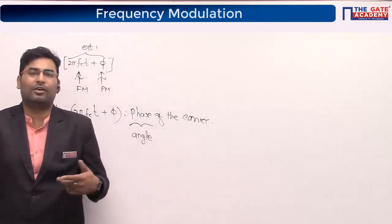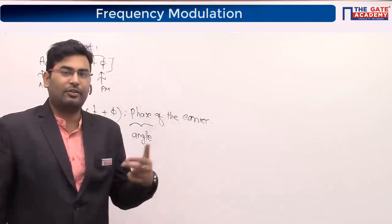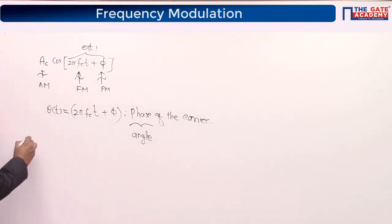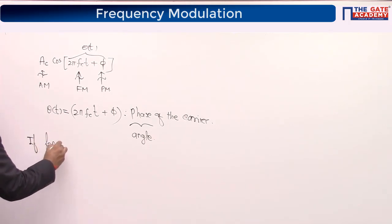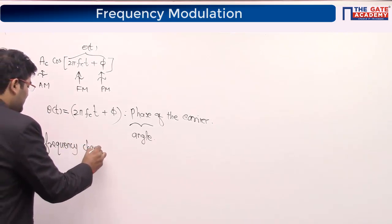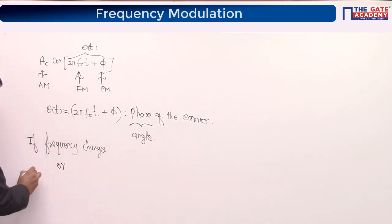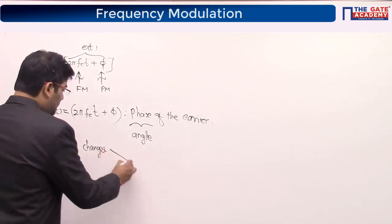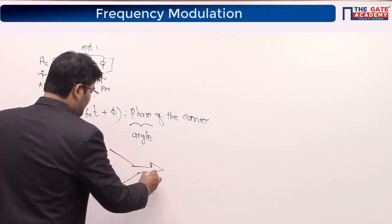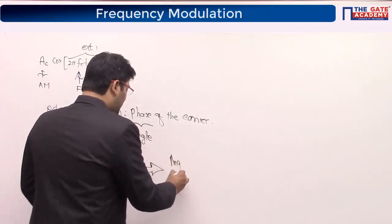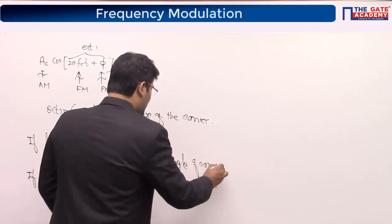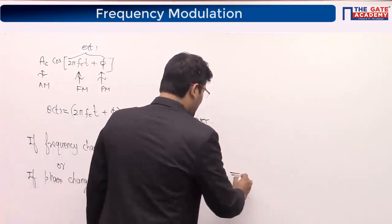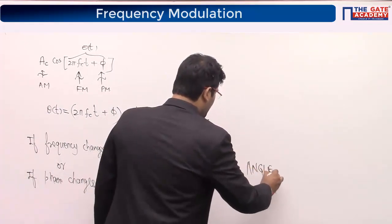A lot of people don't understand why it is called angle modulation. Because you are able to change the angle with respect to frequency fc or phase shift φ. If frequency changes, or if phase changes, the angle of carrier also changes, and that's why it is called angle modulation. In five minutes, I have justified the title.